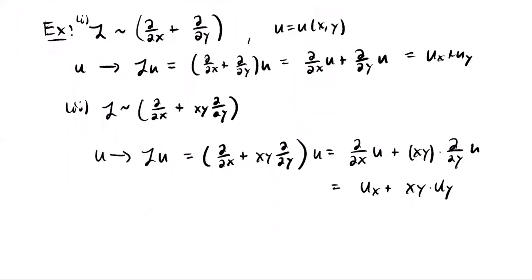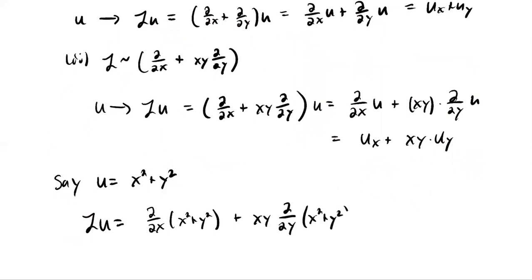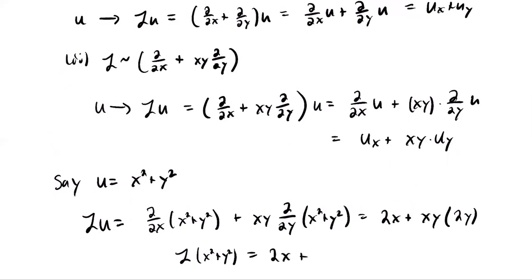Let's use an explicit function. Say U equals x squared plus y squared. Then L of U is the x-derivative of x squared plus y squared, plus xy times the y-derivative. The first term is 2x. The second term is xy times 2y. So for this particular function, the operator takes x squared plus y squared and outputs 2x plus 2xy squared.